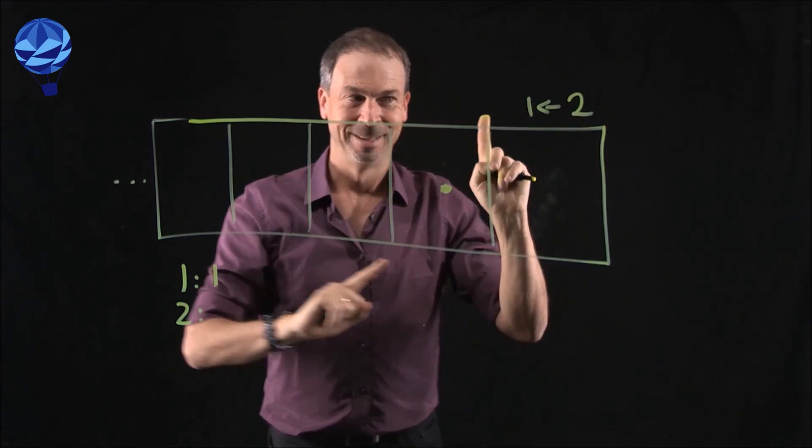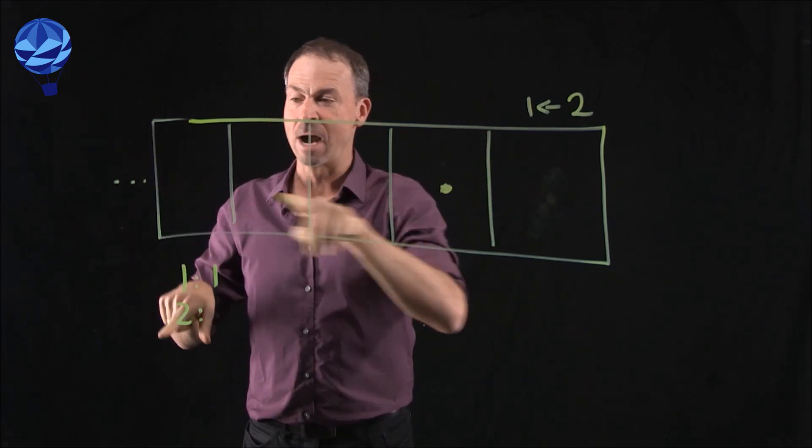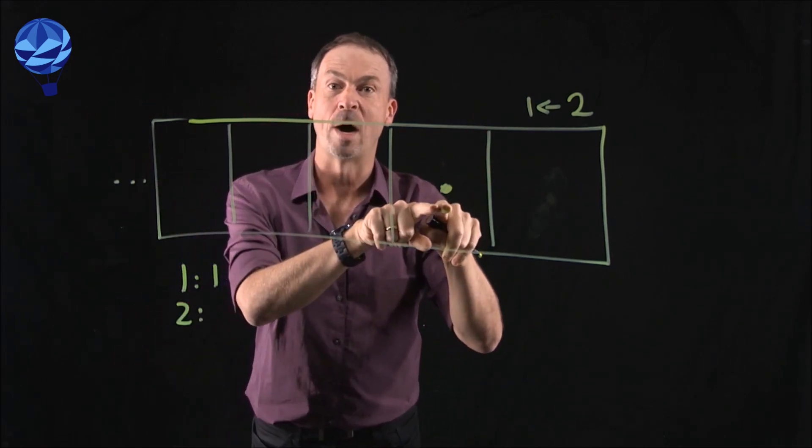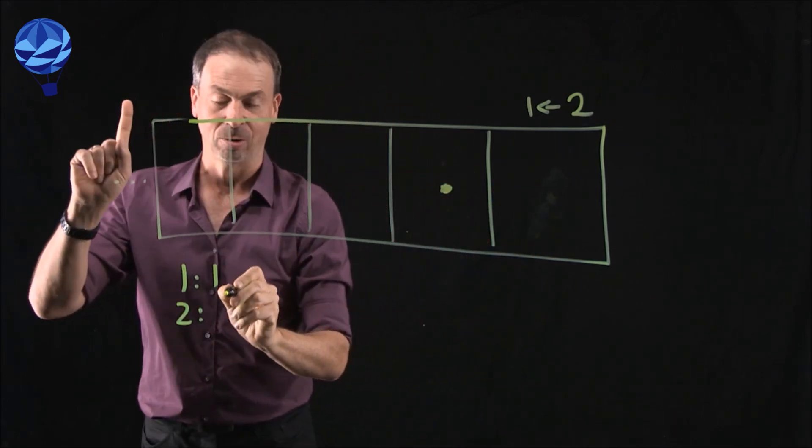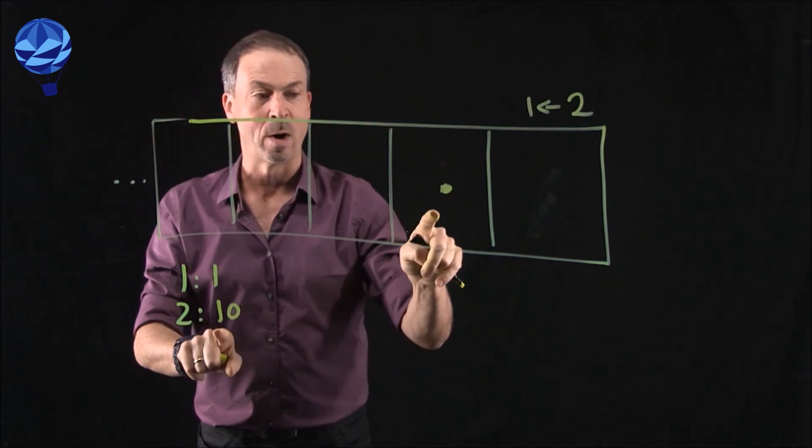Get it? Alright, so now two dots looks like this picture, which I'm going to write as nothing, nothing, nothing, nothing, one dot, zero dot. So the code for two in a 2-1 machine is now 1-0.